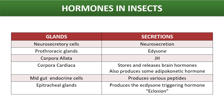In insects, growth and metamorphosis are controlled by hormones that are synthesized by the endocrine glands near the front of the body. We can see certain glands and their secretions. The glands are the neurosecretory cells, the prothoracic glands, corpora alata, corpora cardiaca, mid-gut endocrine cells, and epitracheal cells. All these glands have their secretions and all play a very important role in the metamorphosis of insects.